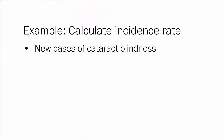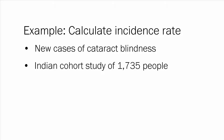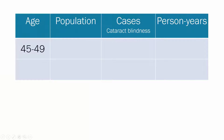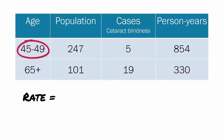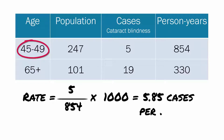We'll calculate the incidence rate of new cases of cataract blindness in an Indian cohort study of 1,735 people followed for one year, calculating the rate per 1,000 person-years for two age groups. Amongst the 247 people aged 45 to 49, there were five new cases of cataract blindness with a total of 854 person-years of follow-up. To calculate the incidence rate per 1,000 person-years, we divide 5 by 854 and multiply by 1,000, giving an incidence rate of 5.85 cases per 1,000 person-years.